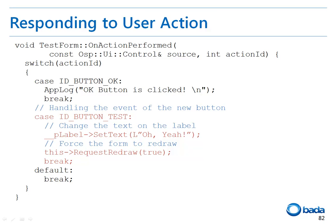Now let's take a look at the actual source code. Since the action event handler of the button was a form, I have added the event handler for the button to the onActionPerformed function of the form. If the action ID is ID_button_test, the setText function is called to change the text of the label to 'oh yeah', and the requestRedraw function of the form is called to display the changed text on the screen. If you run this application, the added label and button are displayed on the screen, and if the button is pressed, the text of the label is changed to 'oh yeah'.